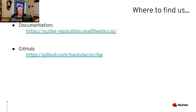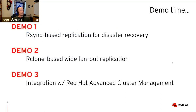You can find the documentation at scribe-replication on Read the Docs, and the code is on GitHub. We have three demos lined up: the first shows the rsync-based data mover in a disaster recovery scenario with a behind-the-scenes look at what Scribe does. The second shows the rclone data mover for data distribution. The third shows how Scribe integrates with Red Hat Advanced Cluster Management to simplify stateful app management.